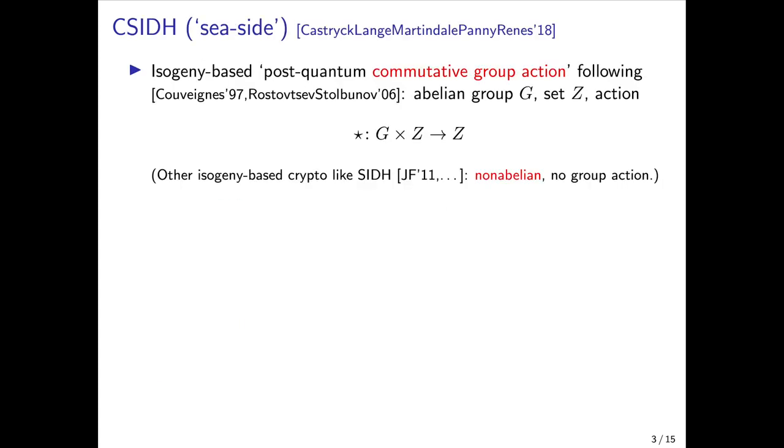Let's now start at the beginning with CSIDH, which is an isogeny-based commutative group action proposed in AsiaCrypt18 by Kastryk, Longa, Martindale, Panny, and Renis, following in the template of Couveignes and Rostovtsev-Stolbunov. In such a group action, we have a group G, some other set Z, and an action star of G on Z, which returns another element of Z. It's important to distinguish this from other isogeny-based proposals like SIDH, which are non-abelian and don't involve a group action at all.